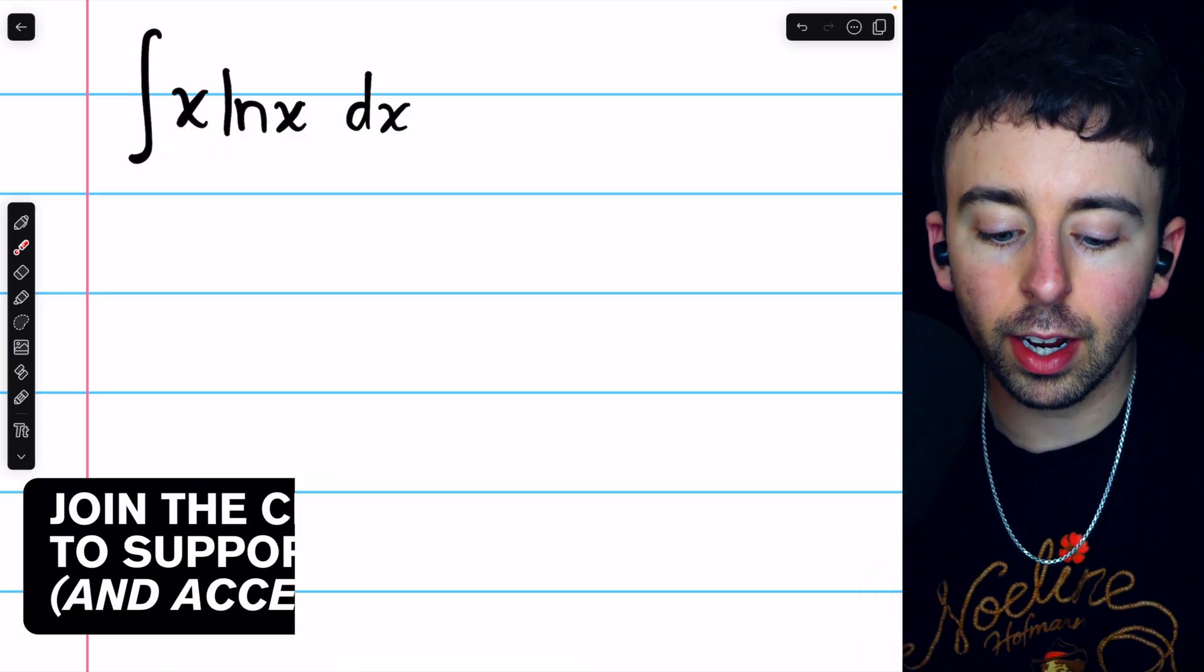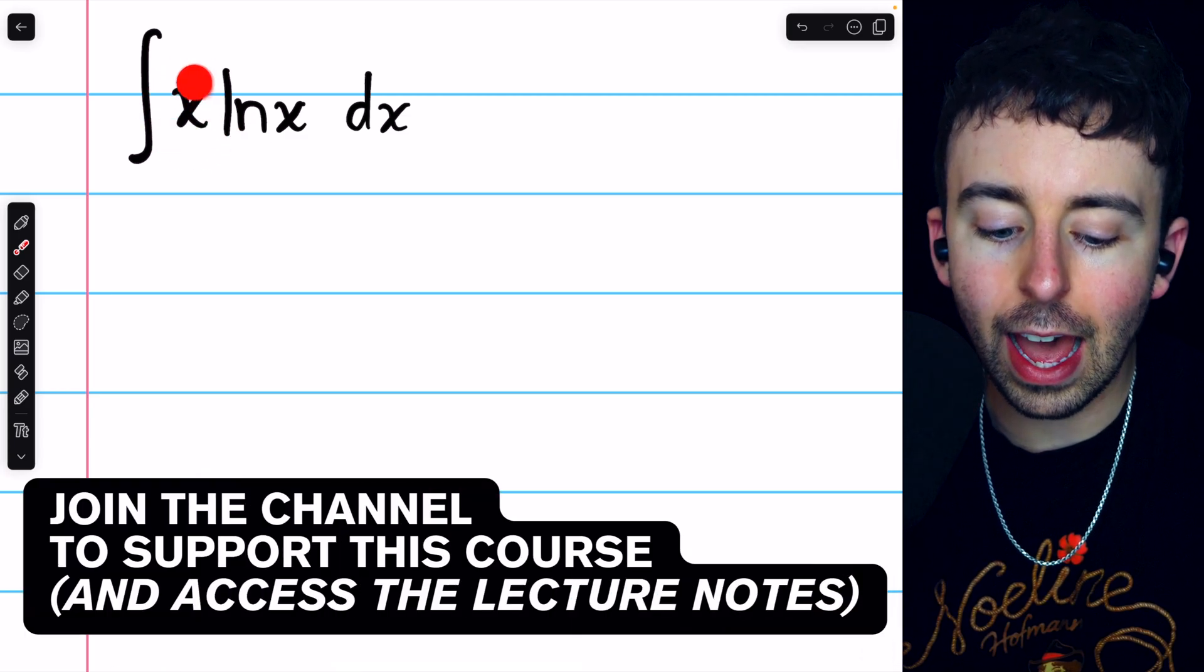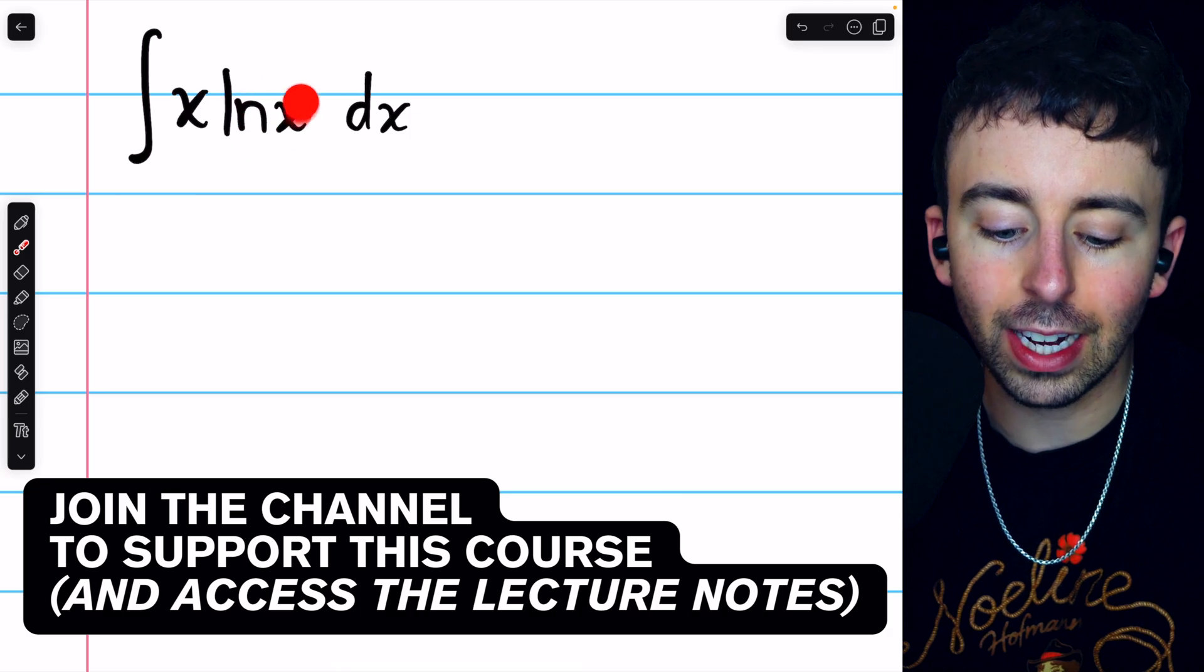x times ln(x) is a product of an algebraic function, x, with a transcendental function, ln(x).